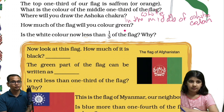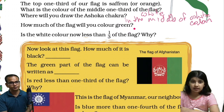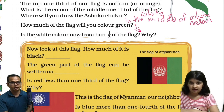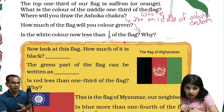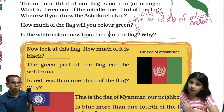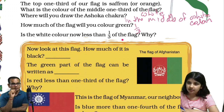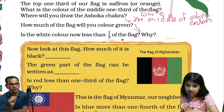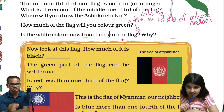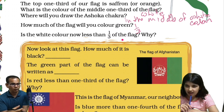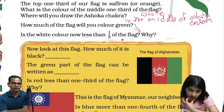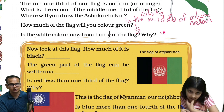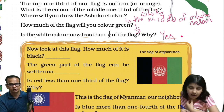How much of the flag will you color green? — One by three. Good. And is the white color less than one by three of the flag? — Yes, because of the Ashoka Chakra. You are right. Because the Ashoka Chakra is drawn on the white color, that's the reason.